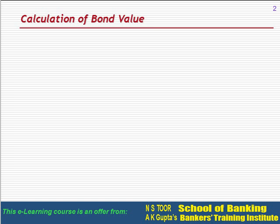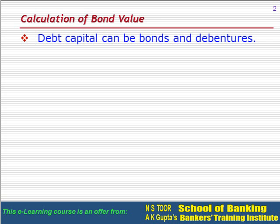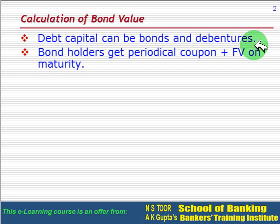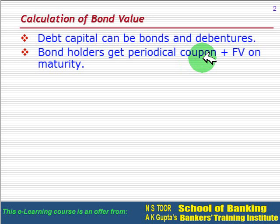In this lecture we are going to discuss the calculation of bond value. The debt capital can be in the form of bonds or debentures. In case of a bond, which is normally issued by government, the holder gets periodical coupon, i.e. interest, plus face value on maturity.